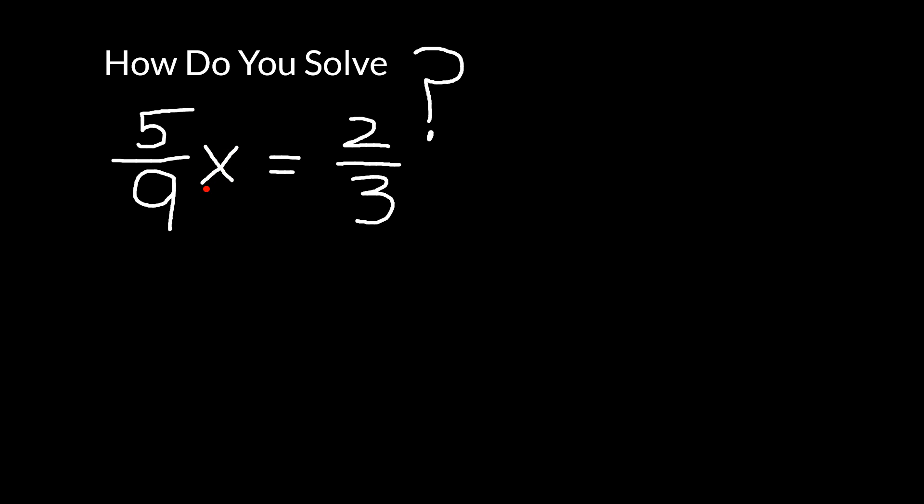That original number has got to be close to double two thirds, which is four thirds or one and a third. So that's a way of thinking about it. But to prove it exactly.